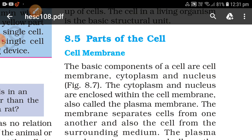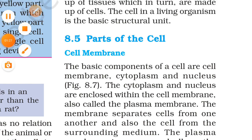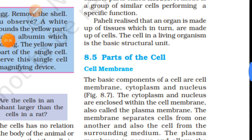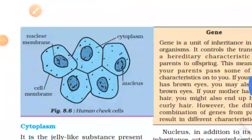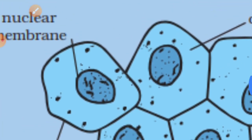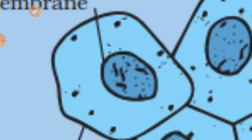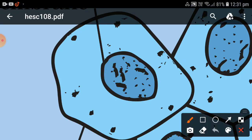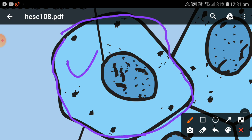Now we will look at what is inside the cell — the cytoplasm and nucleus. I will show you a diagram of the cell using a few colors. This is your cell. Here is the cell membrane — sorry, I mean the cell membrane — and this is the cytoplasm.